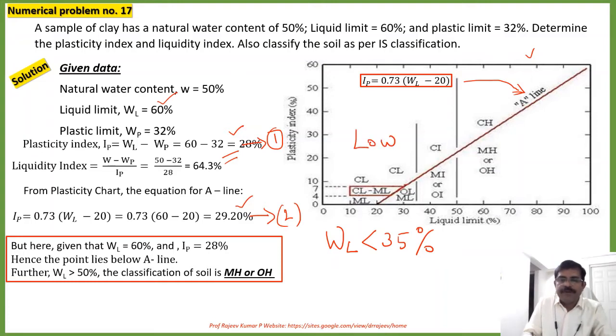But if this one is between 35 and 50, that is like this, then it is intermediate, intermediate compressible soil.